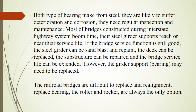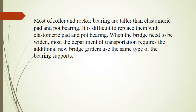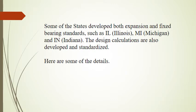Both types of bearing are made from steel and are likely to suffer deterioration and corrosion. Most roller and rocker bearings are taller than elastomeric pad and pot bearings, making it difficult to replace them with elastomeric pad and pot bearings. When a bridge needs to be widened, most Departments of Transportation require the additional new bridge girders to use the same type of bearing supports. Some states have developed both expansion and fixed bearing standards, such as Illinois, Michigan, and Indiana.